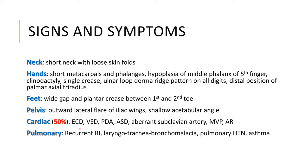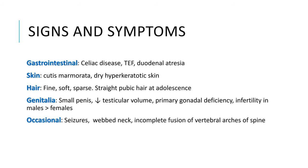Cardiac defects are present in almost 50% of children with Down syndrome, most commonly endocardial cushion defect, ventricular septal defect, patent ductus arteriosus, atrial septal defect, and aberrant subclavian artery. In later age, it may be associated with mitral valve prolapse and aortic regurgitation. In the pulmonary system, there are recurrent respiratory infections, laryngotracheobroncomalacia, pulmonary hypertension, and development of asthma in later adulthood. In the gastrointestinal tract, there is celiac disease, tracheoesophageal fistula, and duodenal atresia.